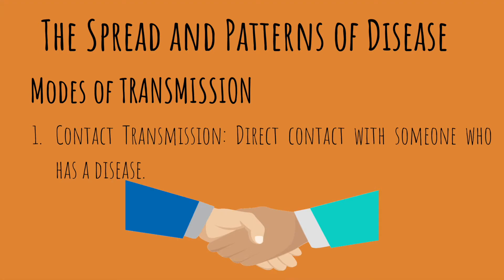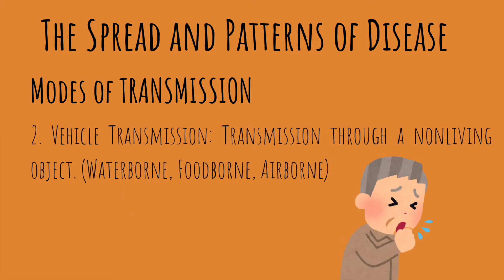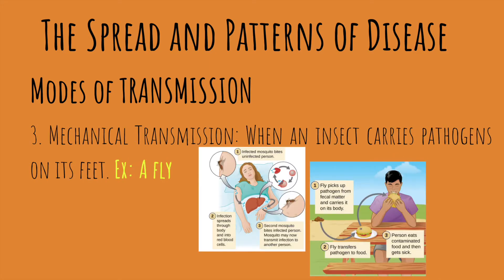There are three ways a disease can be transmitted. Contact transmission occurs when you make direct contact with someone carrying a disease. Vehicle transmission is when a disease spreads through aerosols from a cough or sneeze, and can also be foodborne, waterborne, or airborne. Mechanical transmission is when an individual receives a disease carried on an insect's body — either through a mosquito bite or a fly transferring pathogens onto food.